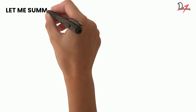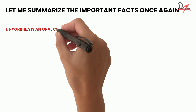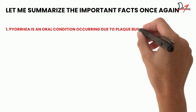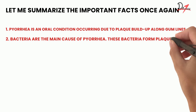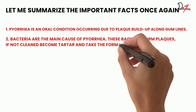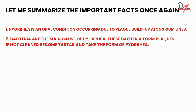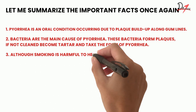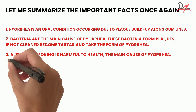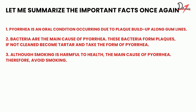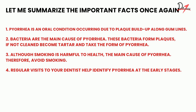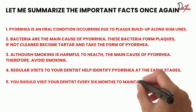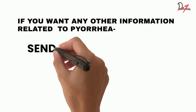To summarize: pyorrhea is an oral condition occurring due to plaque buildup along gum lines. Bacteria are the main cause — they form plaque, then calculus, leading to destruction of even the bone if not treated. Smoking is also a main cause of pyorrhea, so avoid it. Regular visits to your dentist help identify pyorrhea at early stages; you should visit every six months to maintain good oral hygiene.